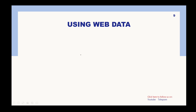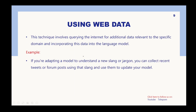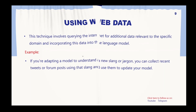The fifth technique is using web data. The language model consumes additional information from the internet and uses it for different purposes. For example, if the language model wants to learn different kinds of slangs, it will collect data from Twitter, Instagram, and other social media platforms to understand slang from different languages. These are the main techniques used in language model adaptation.